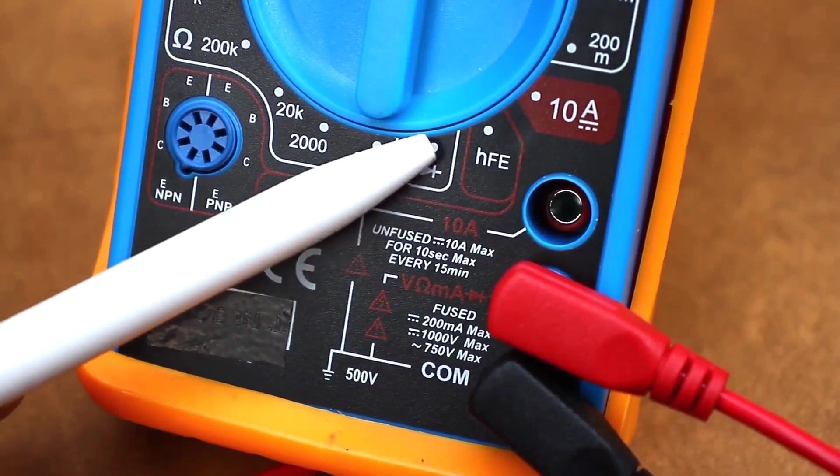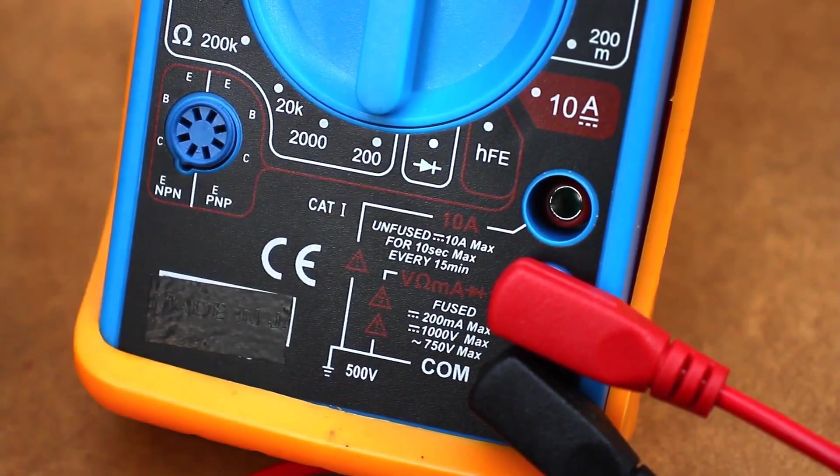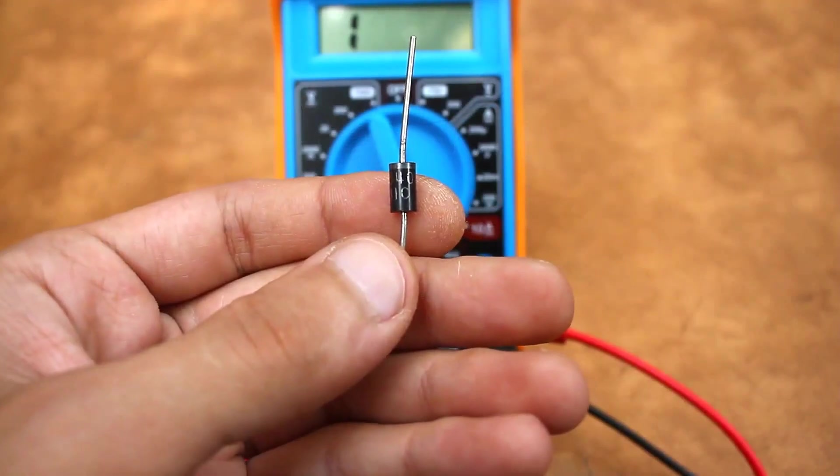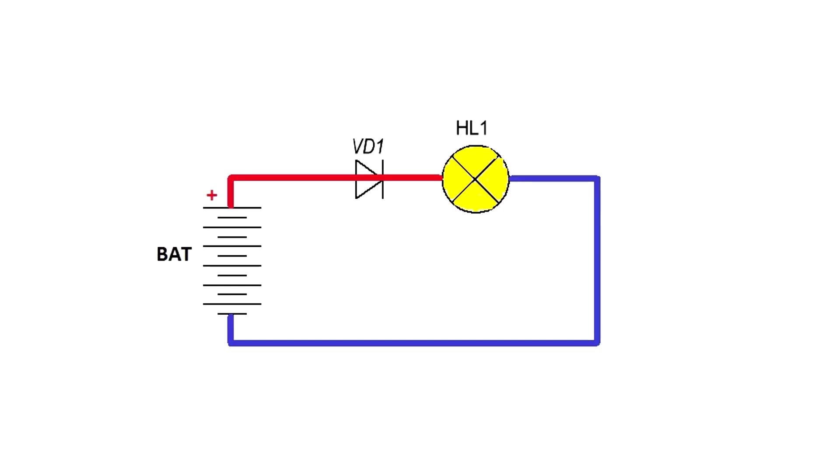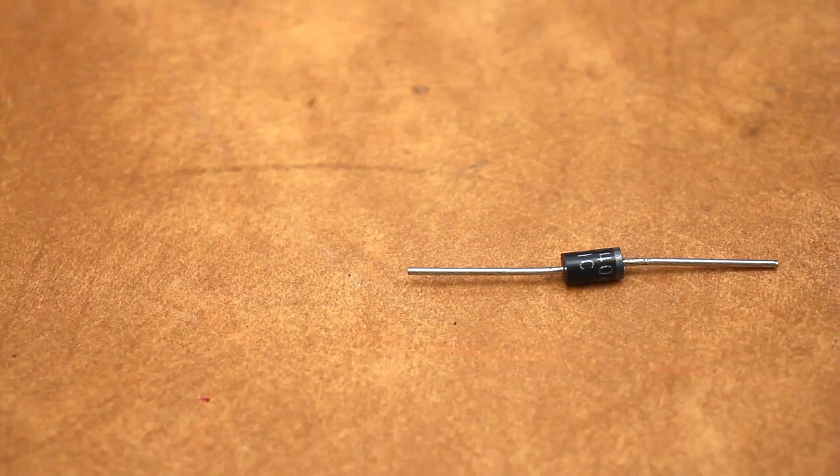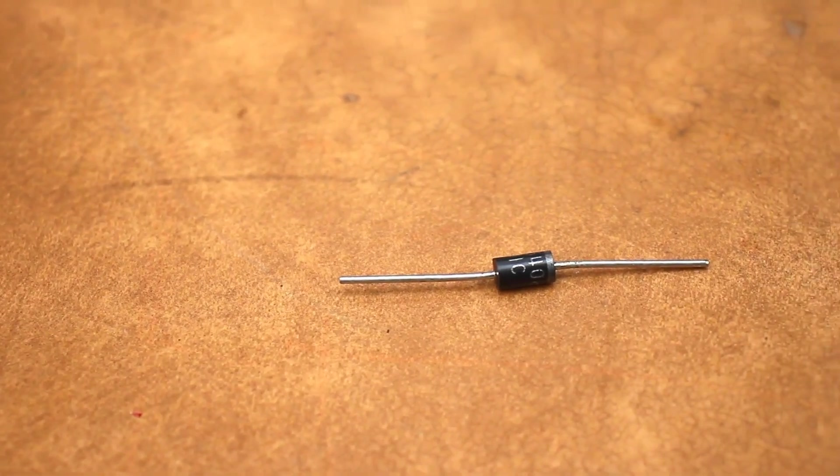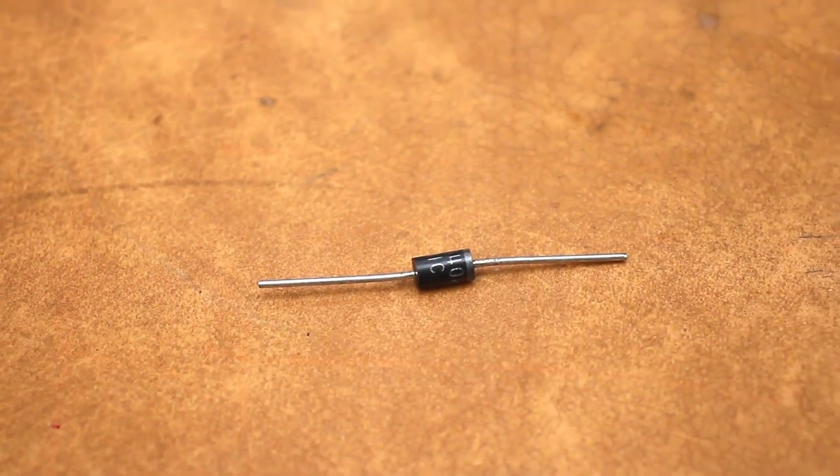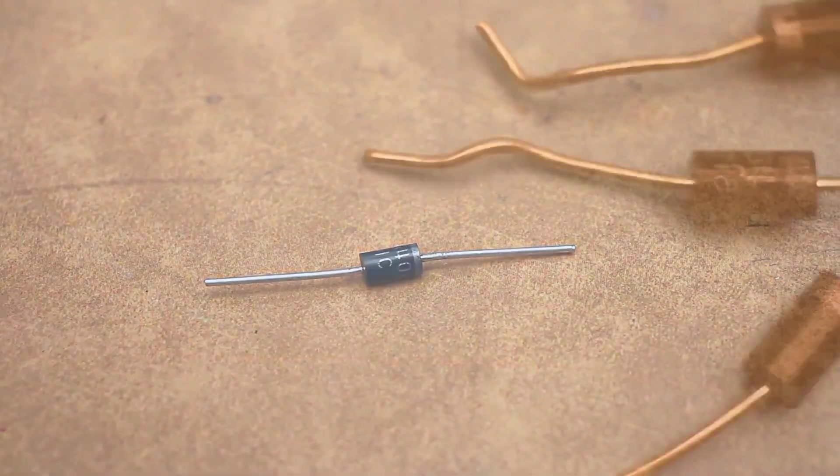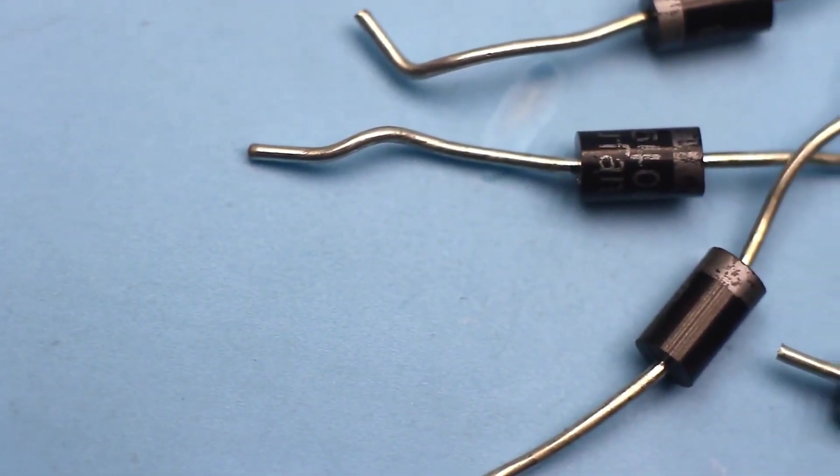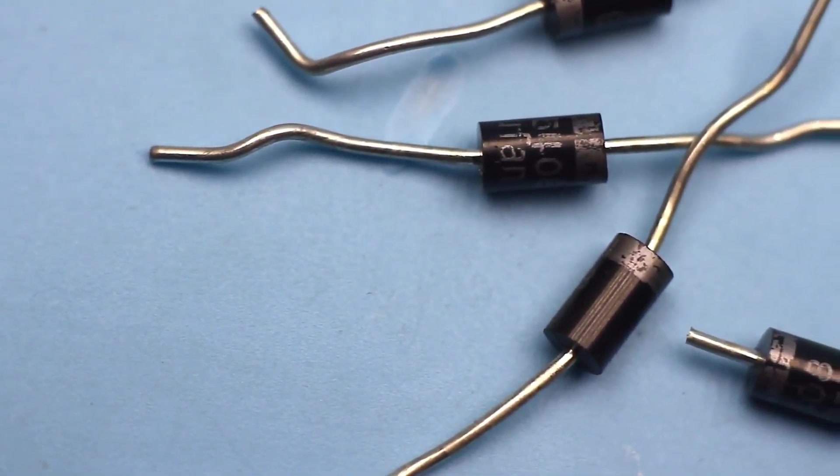A meter with a diode symbol will allow you to measure the voltage drop across the diode. And in general, check if the diode is working. A diode allows current to pass in one direction and blocks it in the other. When current passes through a diode, a voltage drop occurs on the diode's chip, which leads to the diode heating up. The more current flows through the diode, the more it will heat up.